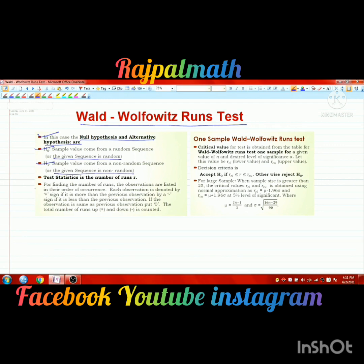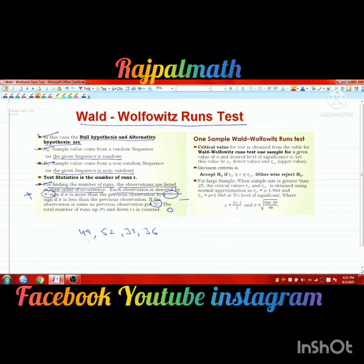The test requires finding the number of runs. Observations are listed in order of occurrence. If an observation is less than the previous one, mark a negative sign; if greater, mark a positive sign. For example, given 49, 52, 31, and 36: 52 gets a plus sign (greater than 49), 31 gets a negative sign (less than 52), and 36 gets a positive sign (greater than 31).